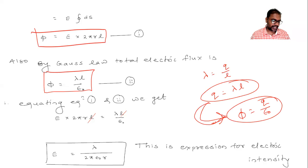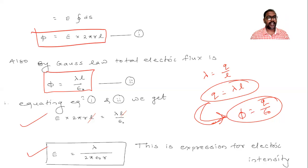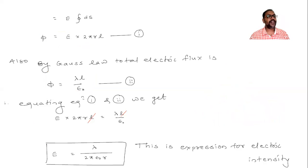Equating equation one and equation two, and cancelling the common term l from both sides, we get the expression for electric intensity: E equals lambda upon 2 pi epsilon zero r. This is the expression for electric intensity near a charged cylinder or a charged wire.